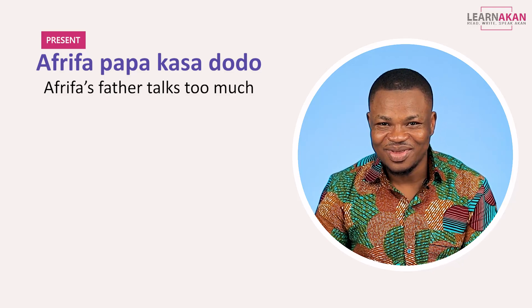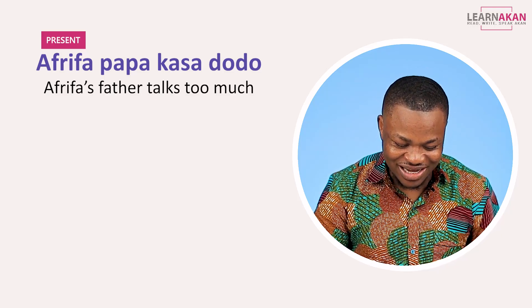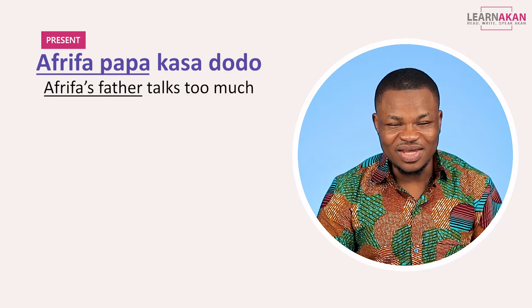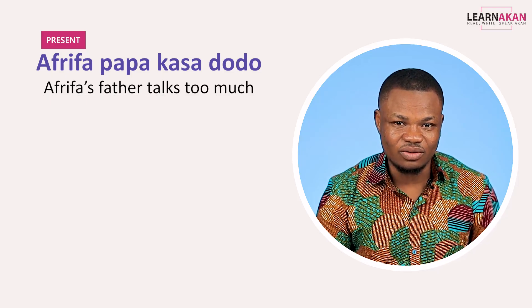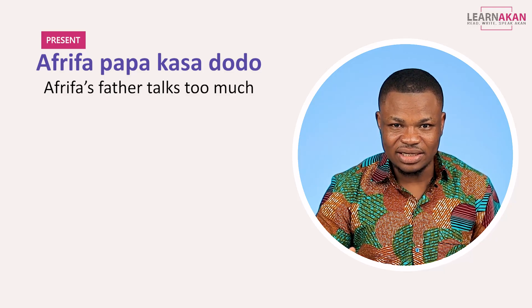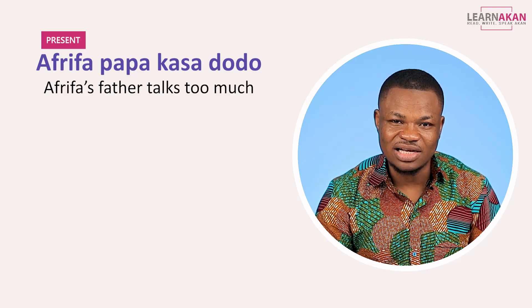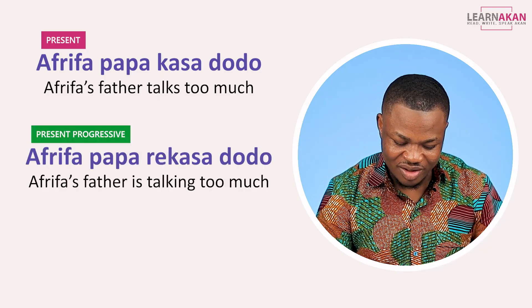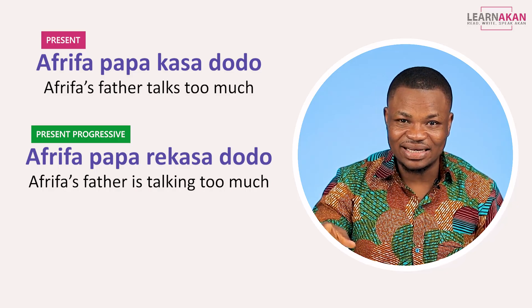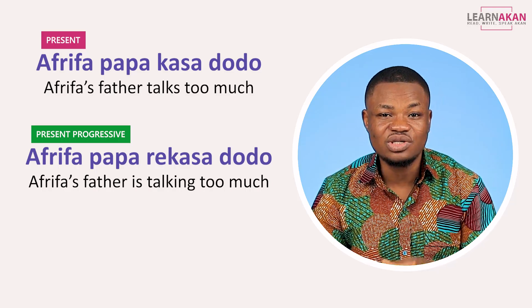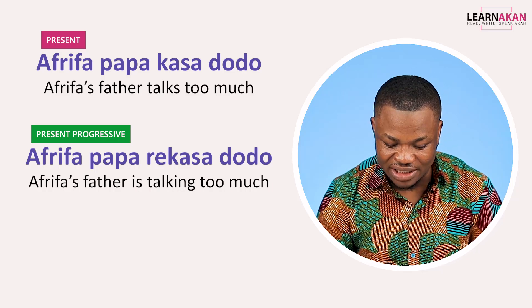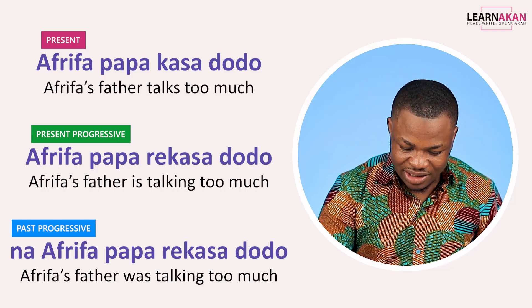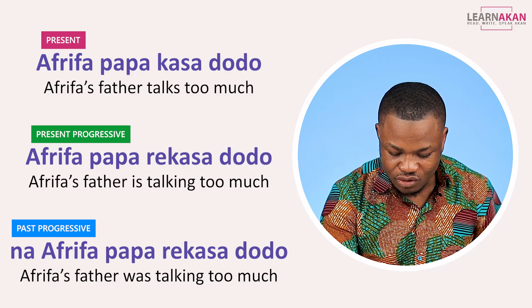For the next example we have 'efifapapa kasadodo' — 'Dad talks too much' — where the subject is 'efifapapa' and the verb is 'kasa', to talk. To put this in the present progressive, we introduce 're' before the verb 'kasa', so we get 'efifapapa rikasadodo' — 'Dad is talking too much'. To situate this in the past, we introduce 'na' before the subject, so we get 'na efifapapa rikasadodo' — 'Dad was talking too much'.